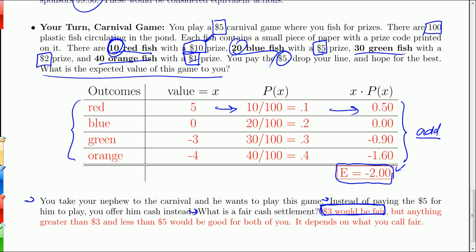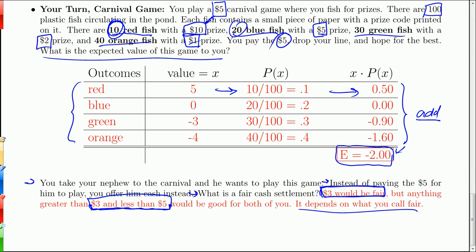You're only out $3 instead of $5, so that feels pretty good. But if you give him anything more than $3 and less than $5, you're still better off because you're going to lose $5 one way or the other. So anything less than $5 is good for you. And anything bigger than $3 is also a winner. It depends on what you call fair, but everyone's a winner if you just give them somewhere between $3 and $5 cash. That's how to bribe your way out of a carnival game with your nephew.